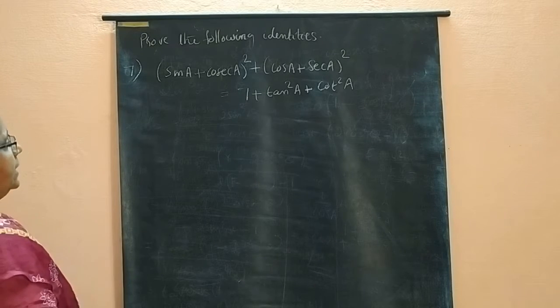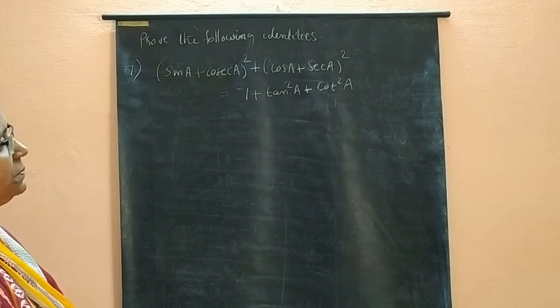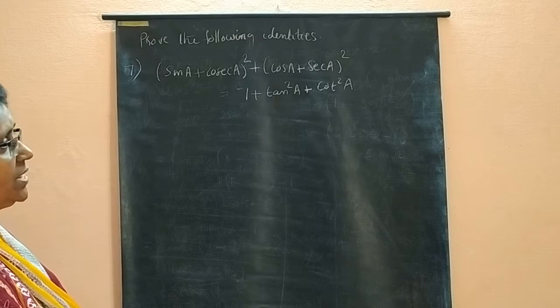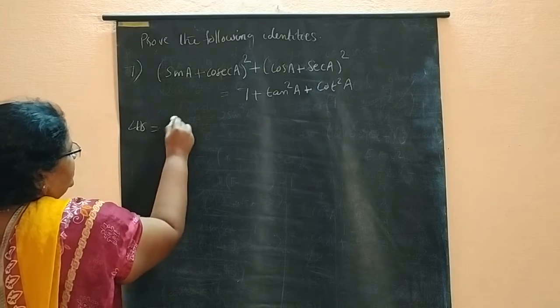So here, sin A plus cosec A whole square plus cos A plus sec A whole square is equal to 7 plus tan square A plus cot square A. So I am going to take the LHS.